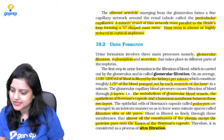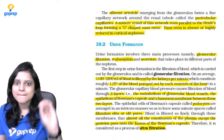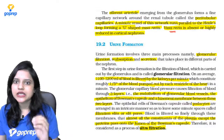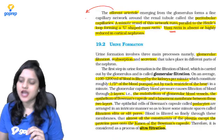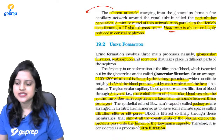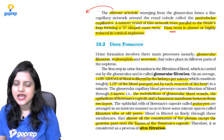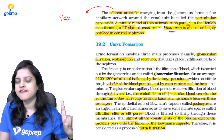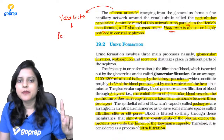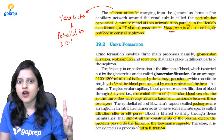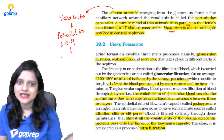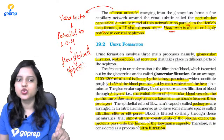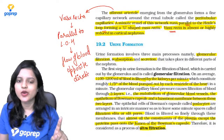The efferent arteriole divides into capillaries called peritubular capillaries, which run parallel to the loop of Henle — this is the vasa recta. The flow of blood in vasa recta is in the opposite direction compared to the loop of Henle, creating a counter current mechanism, which is responsible for the concentration of urine.